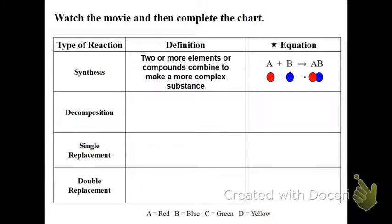And then when we see in a few minutes, we'll be looking at C will be green and D will be yellow. So when things are put together like this, that indicates that they are chemically bonded together. When they're separate like this, that indicates that it's a single element.